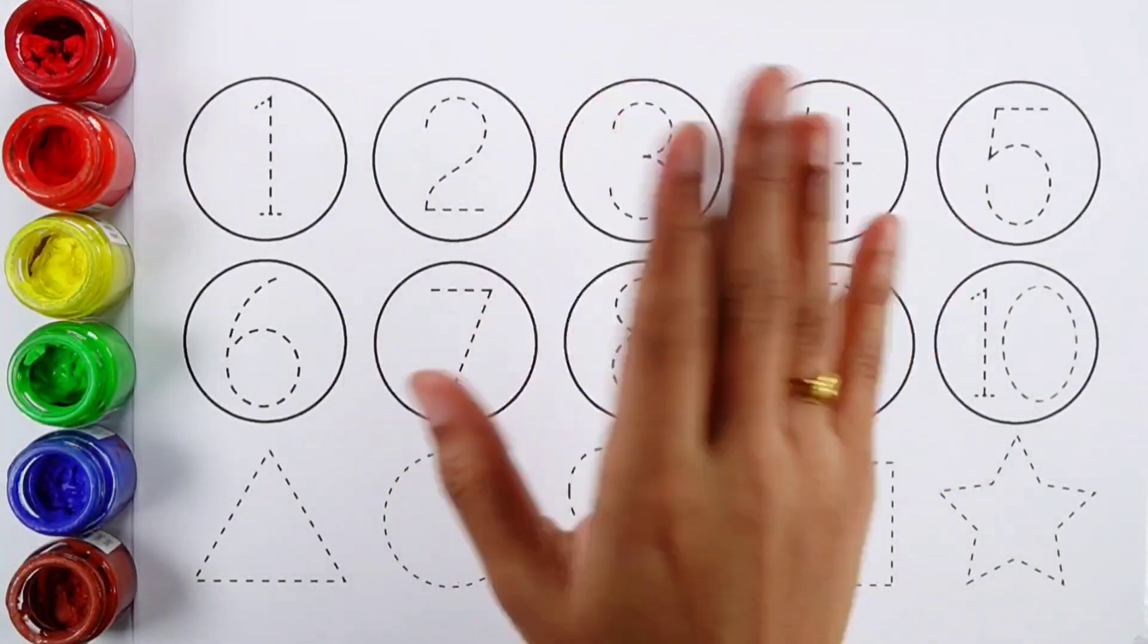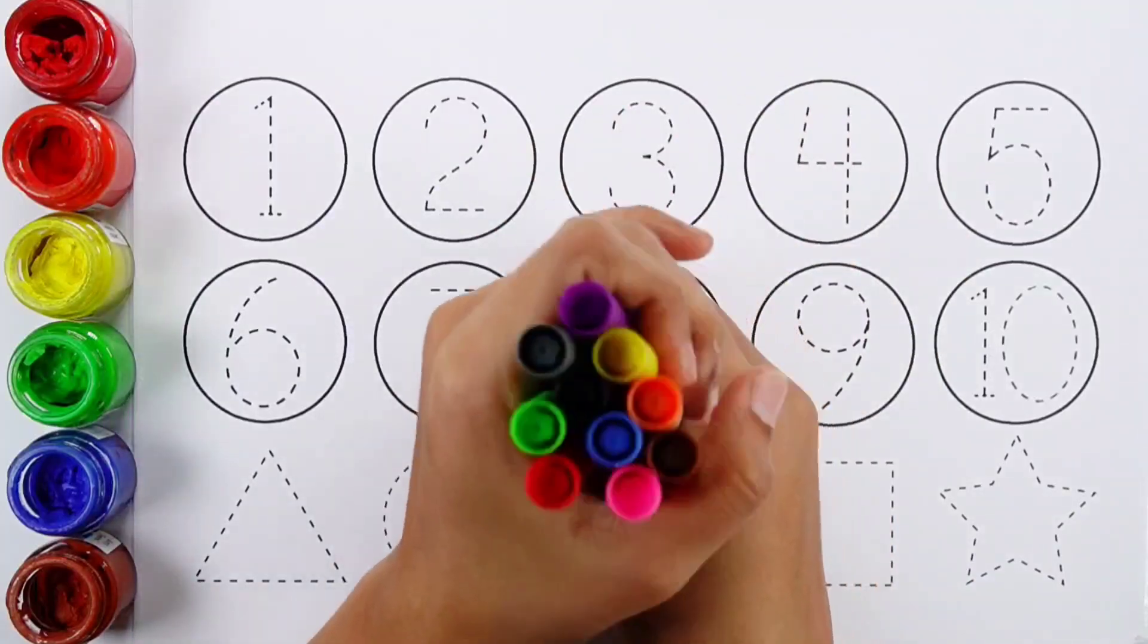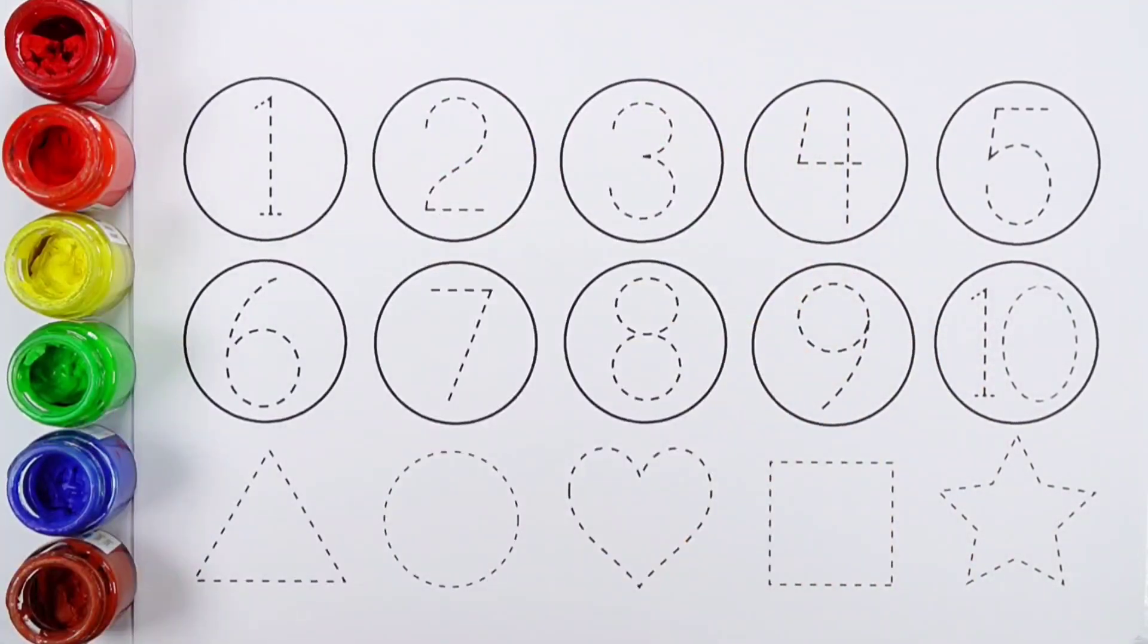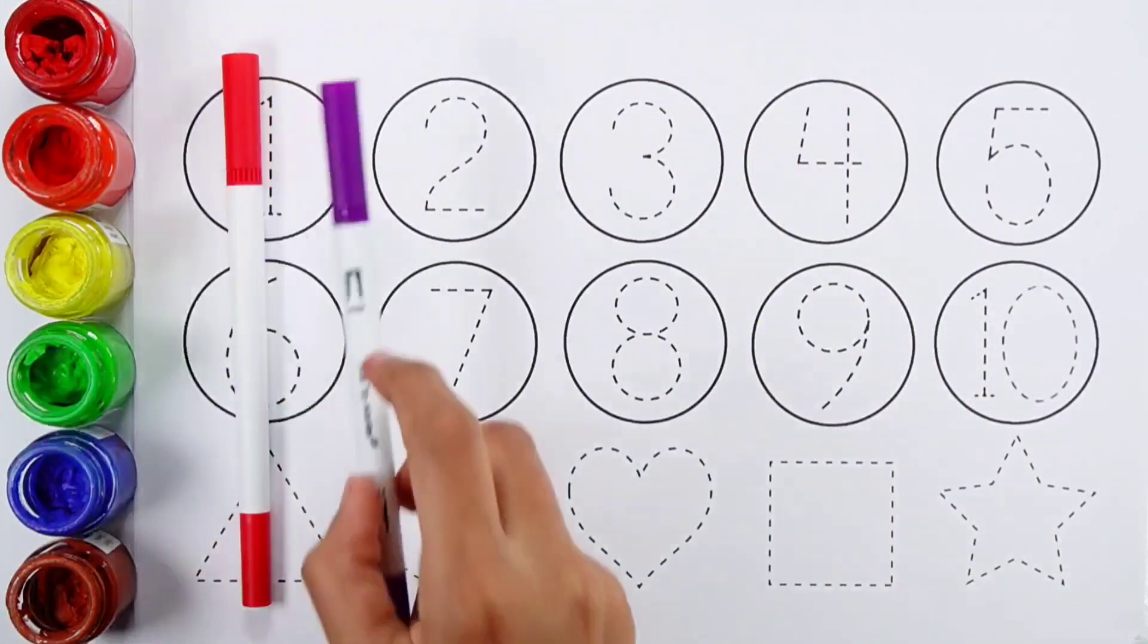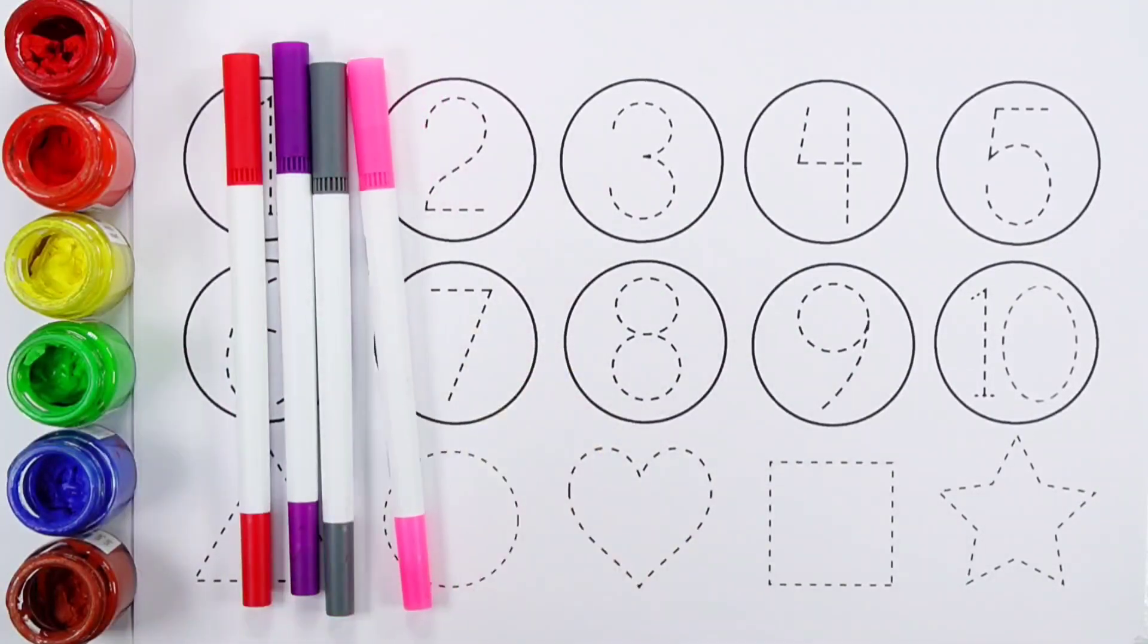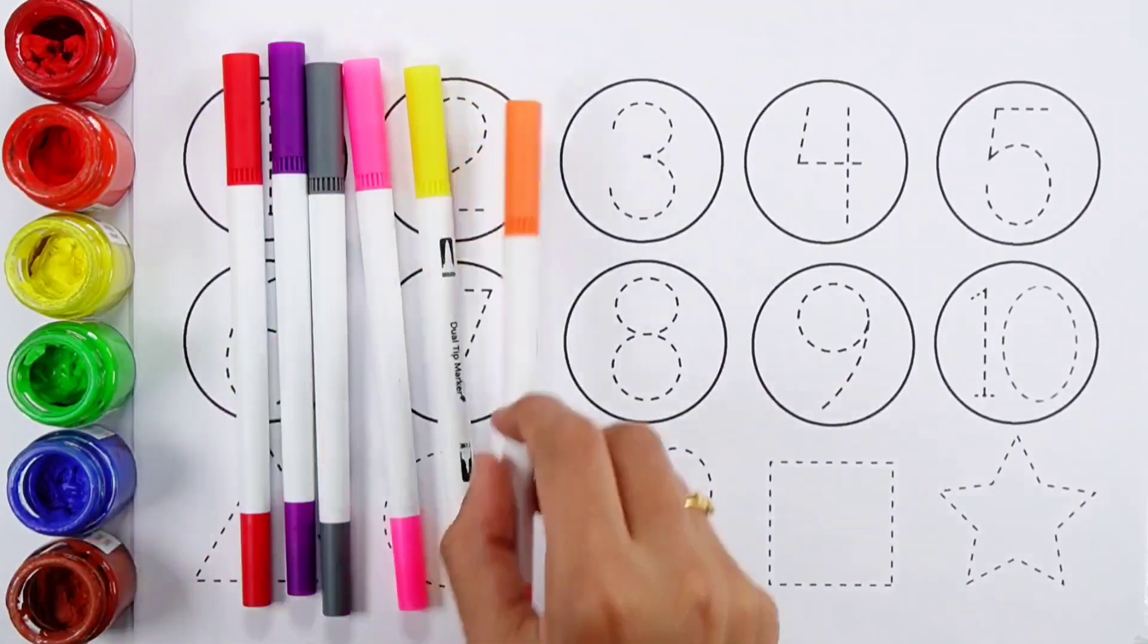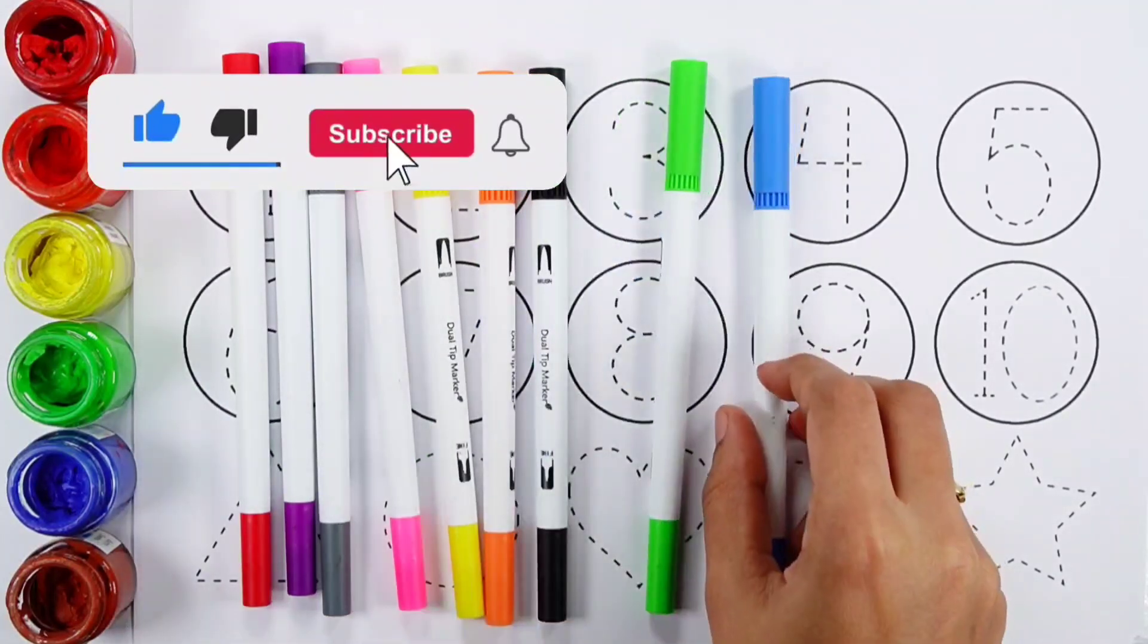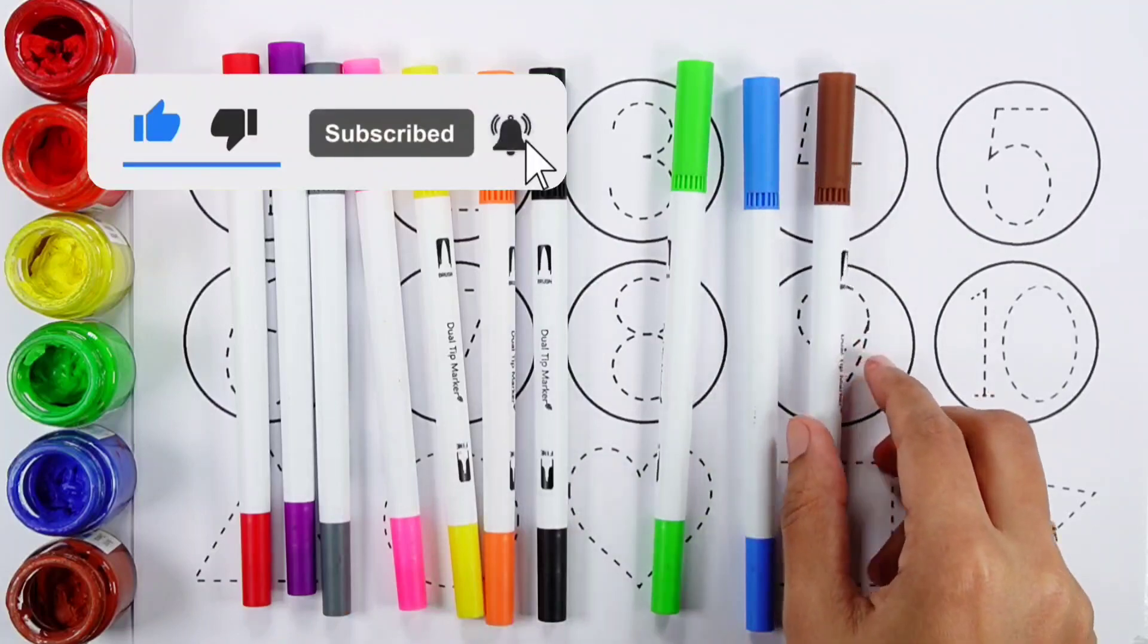Hello guys, let's learn some colors: red color, purple color, gray color, pink color, yellow color, orange color, black color, green color, blue color, brown color.